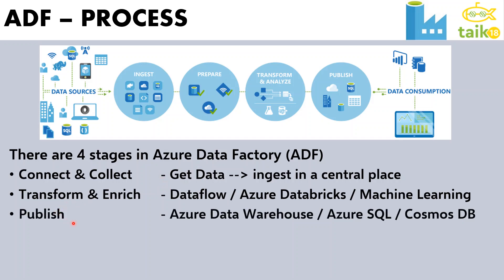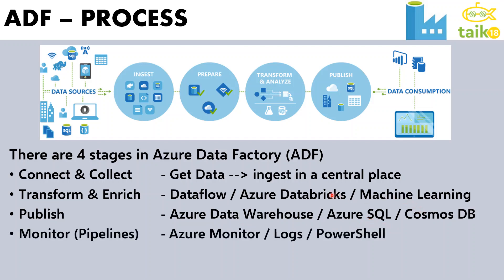Then we need to publish this data — either to Azure Data Warehouse, Azure SQL, or Cosmos DB. Finally, we need to monitor it. The flows we create are called pipelines, so we need to schedule those pipelines and then monitor them through Azure Monitor, log analytics, or PowerShell scripts. These are the four stages of the Azure Data Factory process.